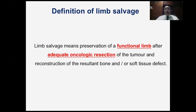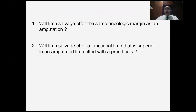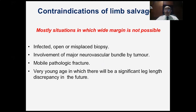How do we define limb salvage? Limb salvage means the preservation of a functional limb after adequate oncologic resection of the tumor and reconstruction of the resultant bone and soft tissue defect. We ask ourselves two questions: Will limb salvage offer the same oncologic margin as an amputation? And will limb salvage offer a functional limb that is superior to an amputation fitted with a prosthesis? If yes to both, we go ahead. So the two prerequisites are a safe oncologic margin and a resultant limb superior to an amputation.